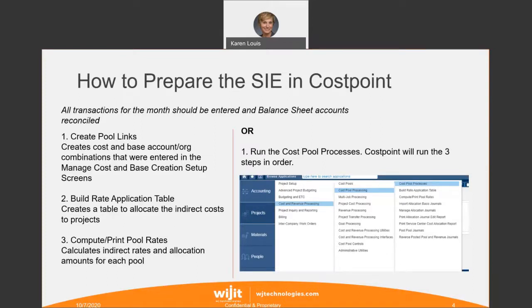On the left-hand side there are three steps that you perform in Cost Point to calculate the statement of indirects. As you can see in the screenshot, you're going to go to Projects, Cost and Revenue Processing, Cost Pool Processing, and then you will do three steps. Two of them are shown here — the Build Rate Application Table and the Compute and Print Pool Rates. And the first one, Create Pool Links, is in another screen.